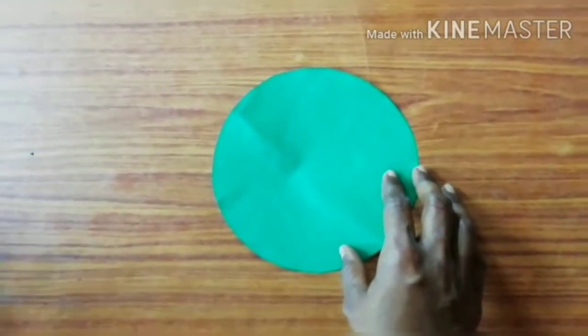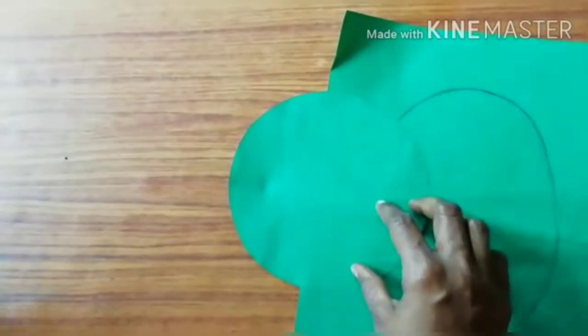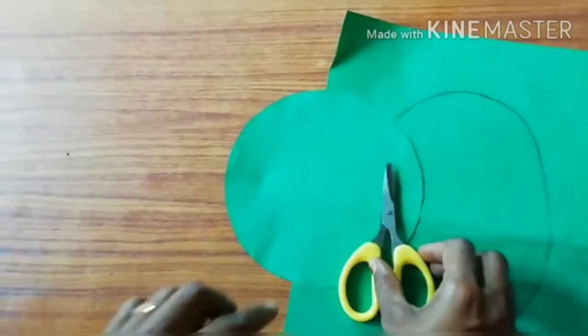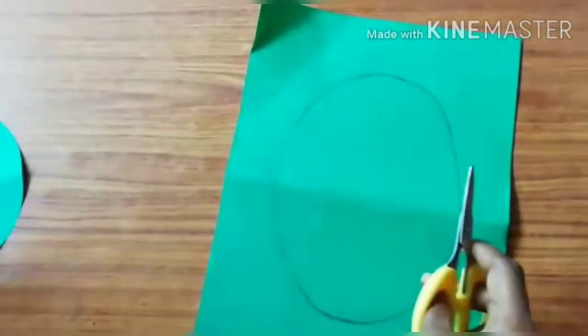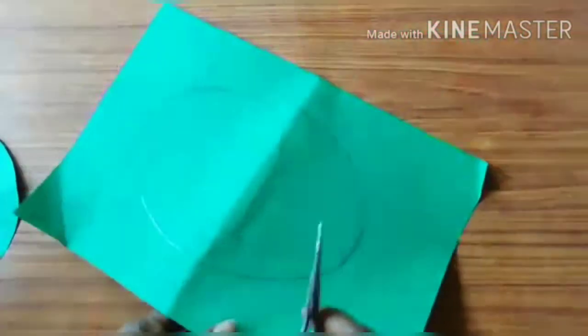And now we are going to cut the ears. You first measure the ears by placing the circle, the face of the elephant, and then cutting the ears according to something like this.